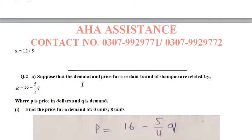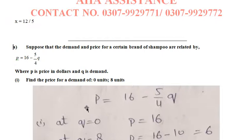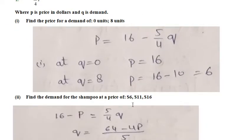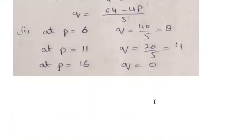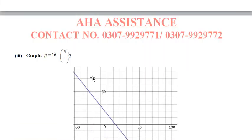In the next question, you have to post the demand of price. The demand of price is a certain brand of shampoo. The price is P in dollars and Q is demand. Now the price is 0 units and 8 units, then the price is $6, $11, $16. Then we will explain the graph.